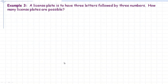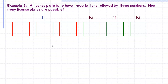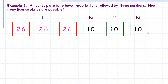Here's another example using license plates. A license plate has three letters followed by three numbers — placeholders: L L L N N N. In the alphabet there are 26 different letters, and we're not restricting letters or numbers from repeating. So each letter position can be filled in 26 ways and each number position in 10 ways. That gives us 26 cubed times 10 cubed, which equals 17,576,000 different license plates.